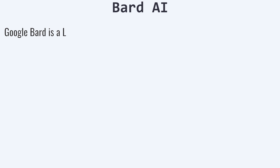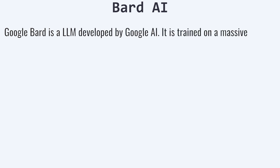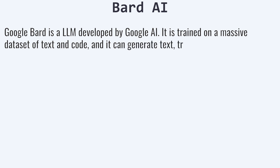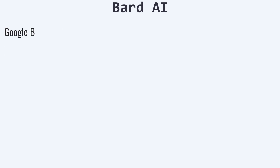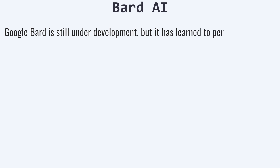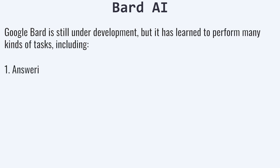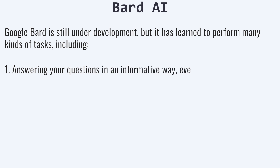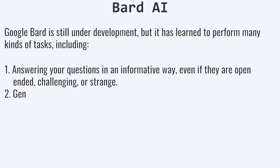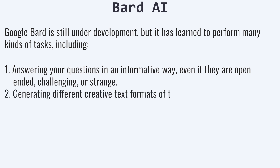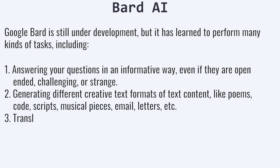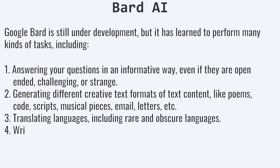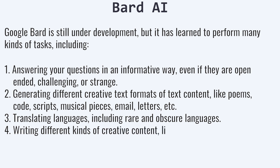Introduction to Google Bard. Google Bard is a large language model developed by Google. It is trained on a massive dataset of text and code, and it can generate text, translate languages, write different kinds of creative content, and answer your questions in an informative way. Google Bard is still under development, but it has learned to perform many kinds of tasks, including: answering open-ended, challenging, or strange questions informatively; generating creative text formats like poems, code, scripts, musical pieces, emails, and letters; translating languages including rare and obscure ones; and writing creative content like fiction, poetry, and scripts.